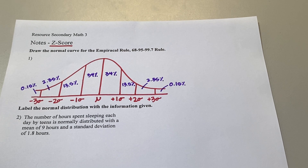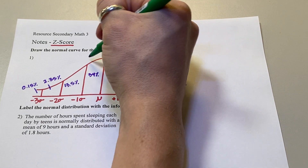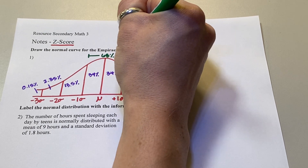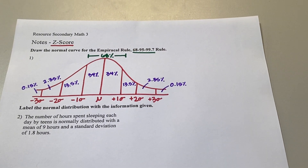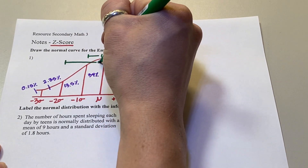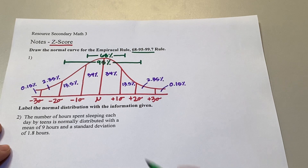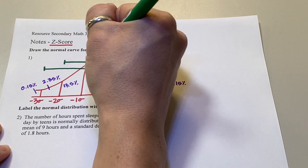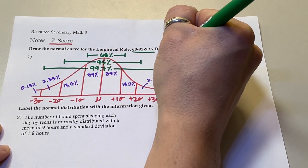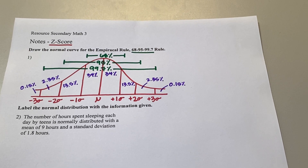They call this the empirical rule, or the 68-95-99.7 rule. Within one standard deviation on both sides, that's 68% of your data. Within two standard deviations, that's where that 95 comes from. And within three standard deviations, all the way out there, that is 99.7% of all your data. That's where those numbers 68, 95, and 99.7 come from.